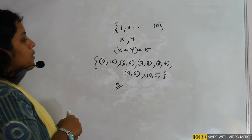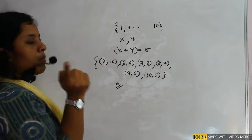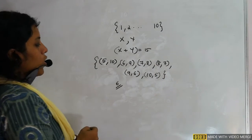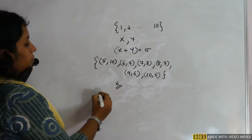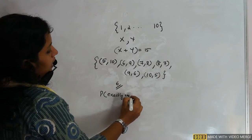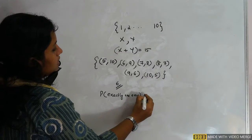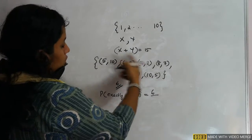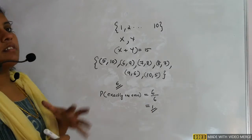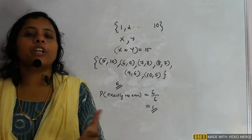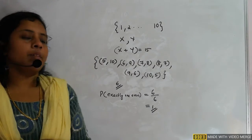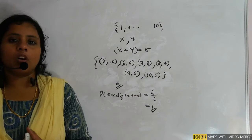Now, exactly one number is even: (5,10) — one even; (6,9) — one even; (7,8) — one even; (8,7) — one even; (9,6) — one even; (10,5) — one even. All six pairs satisfy the condition. So probability = 6/6 = 1. When conditional probability is mentioned, use whichever method is easiest — here classical is simpler.